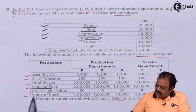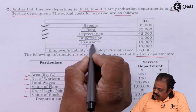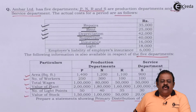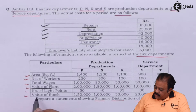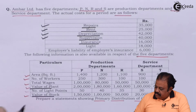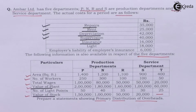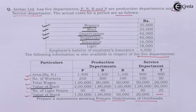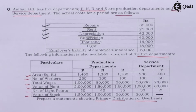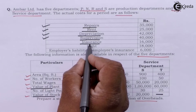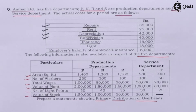The next expense is insurance. This will be allocated based on value of stock, that is in the ratio of 1,50,000 : 1,00,000 : 50,000 : 20,000. In the case of service department T there is no stock, so the amount of insurance charges will not be apportioned to department T.